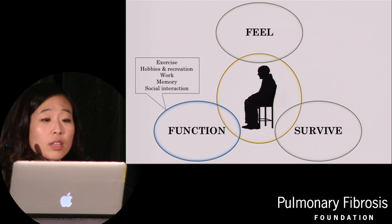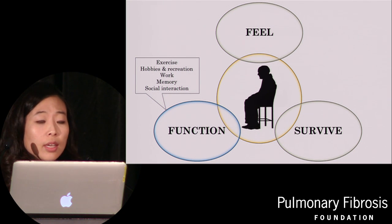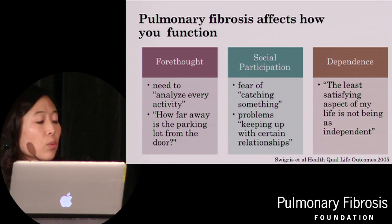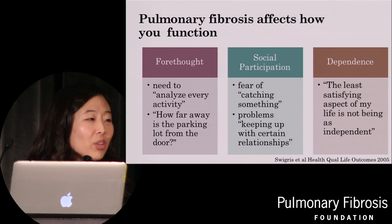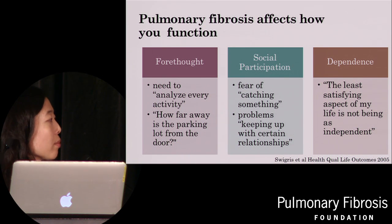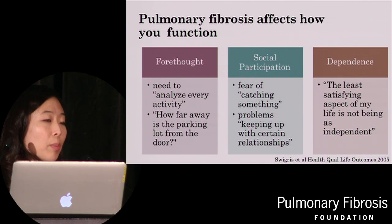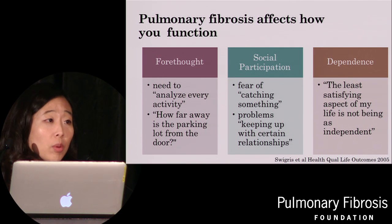Pulmonary fibrosis affects how you function — exercise, hobbies, recreational activities, ability to work, memory, and social interactions. From that same paper, things I didn't realize until I read it included the forethought required — having to plan and analyze every single activity, like how far away is the parking lot from the door. Social participation is affected, especially with the cough — telling someone on an airplane what you have is not contagious, the fear of catching something, and difficulty keeping up with relationships. Finally, beginning to lose your independence, becoming dependent on caregivers and your support network, can be really hard for patients with pulmonary fibrosis.